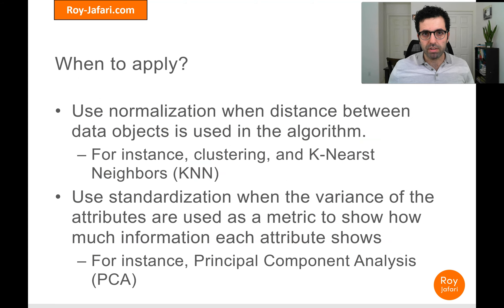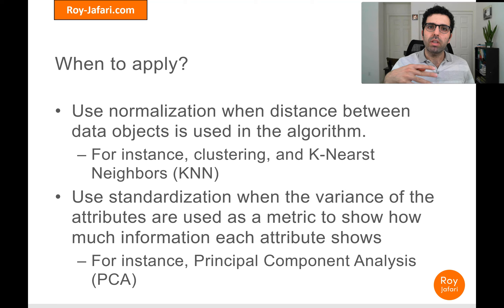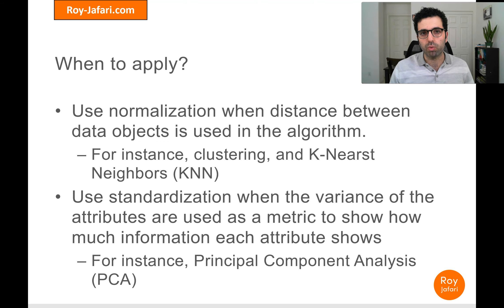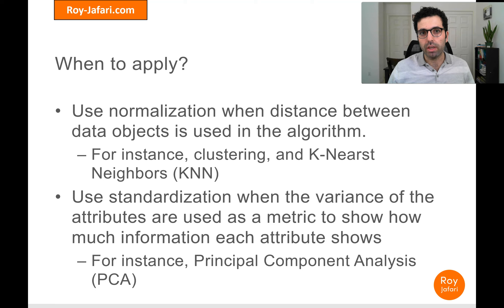So when do we apply them? We apply normalization whenever the algorithm uses distance calculations between data objects — for instance, clustering or K-nearest neighbors, which use distance in how the algorithm works. We use standardization when variance is being used as a metric to capture the amount of information each attribute has. The only method we've learned that uses variance as such a metric is Principal Component Analysis, PCA — so before PCA it's best to use standardization.